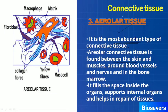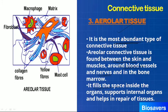Areolar tissue is the most abundant type of connective tissue in our body. It is present between the skin and muscles, around blood vessels and nerves. In short, it connects two parts of the body, fills the spaces inside organs, and supports those internal organs.